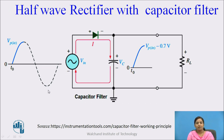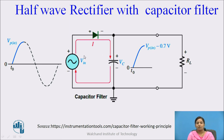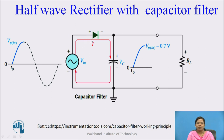Now let us see the rectifier circuit with capacitor — first, the half-wave rectifier with capacitor filter. We know that the half-wave rectifier consists of an input AC source and a diode. In the half-wave rectifier with capacitor filter, the capacitor is placed across the load resistance RL and across the rectifier circuit. During the positive half cycle of the input AC signal, at the initial condition, the voltage across the capacitor Vc is assumed to be zero. Whenever the positive half cycle begins, Vc is less than Vin, so this capacitor starts charging.